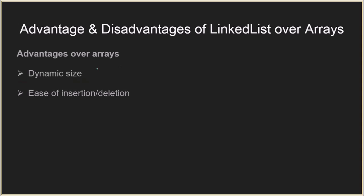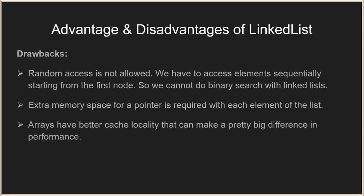Now let's look at the advantages of linked lists over arrays. First is dynamic size — you don't need to declare the size upfront. At runtime you can allocate more memory if you need it, or free memory when you don't. There is also ease of insertion and deletion — in most cases you can perform insert or delete operations in O(1) time complexity. For example, deleting the first element is an O(1) operation.